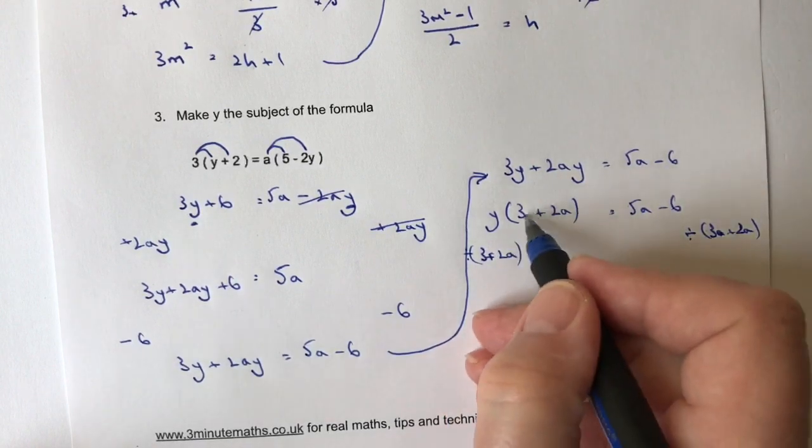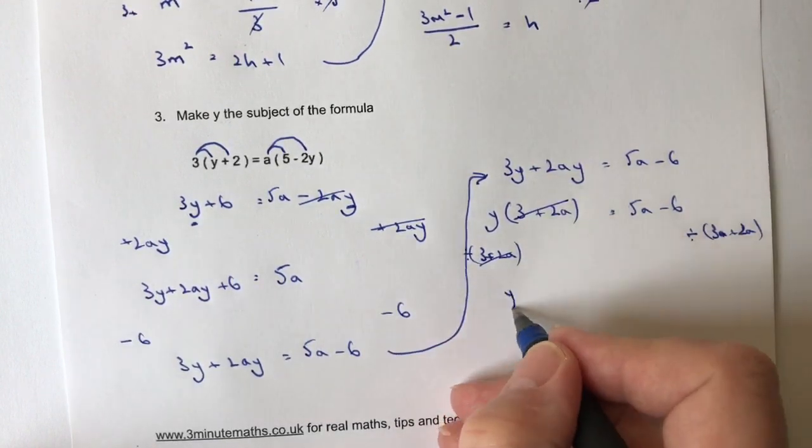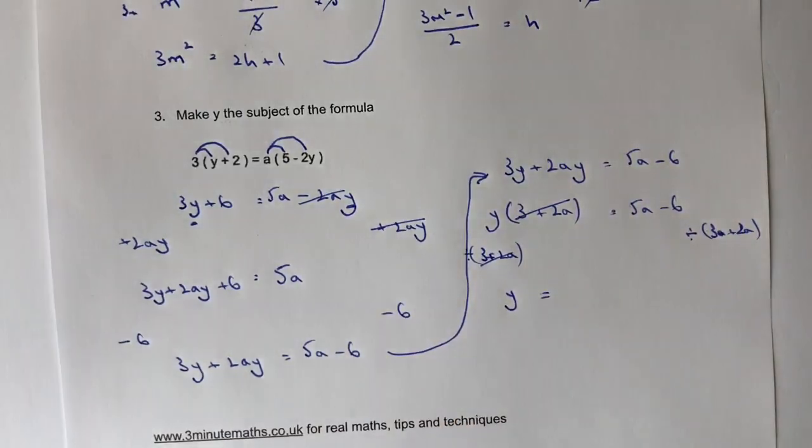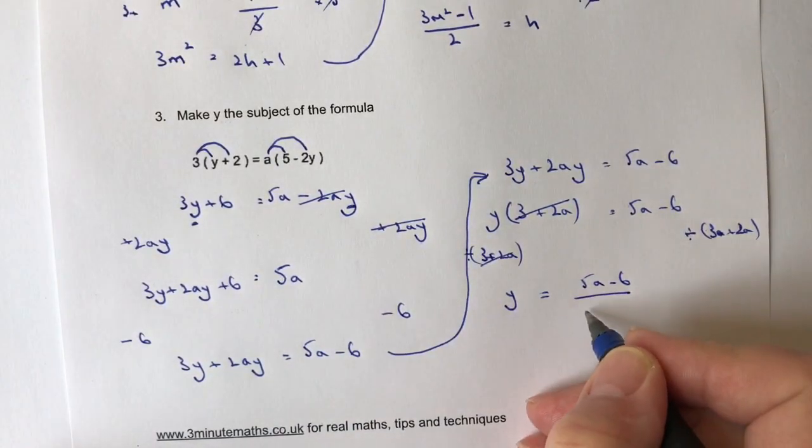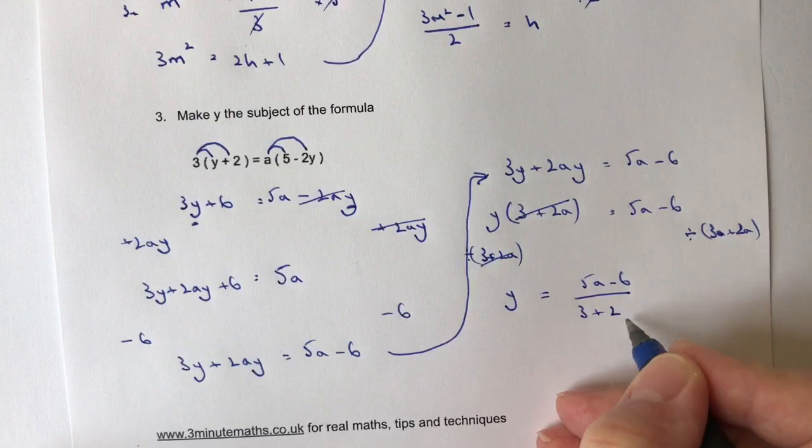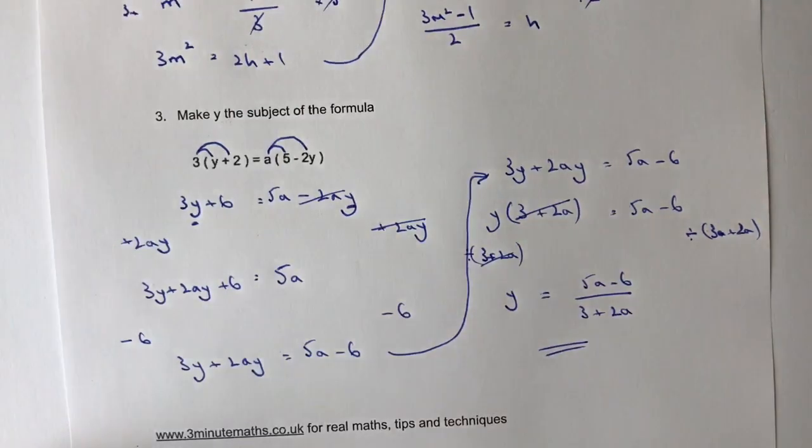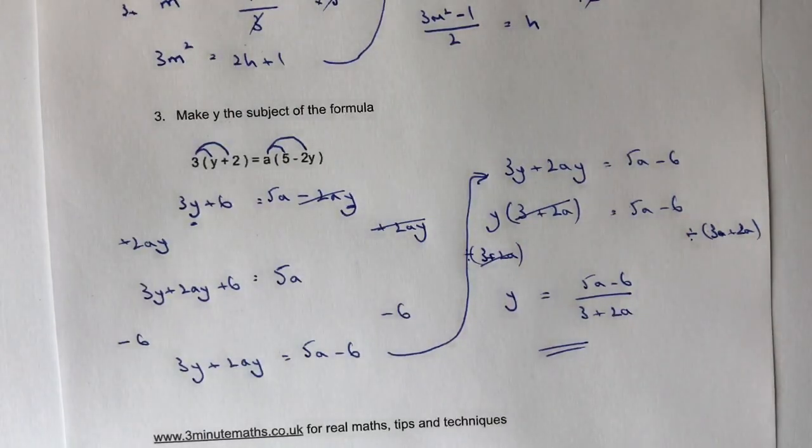If I divide this side, those two knock out and I get Y on its own, which is exactly what I'm looking for. On the right-hand side, I'm going to get 5A minus 6, all divided by 3 plus 2A. That would be the answer to this particular question.